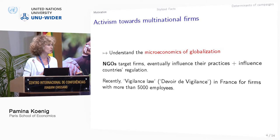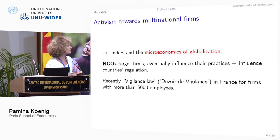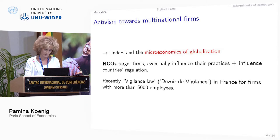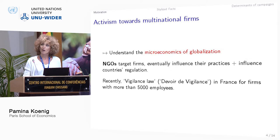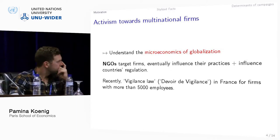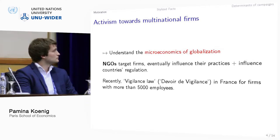They do this because NGOs are involved in protecting and preserving resources, mainly environmental resources or human resources that are used in producing these goods. An example of the potential importance of these agents in shaping trade and sales is the recent law in France, which is called the Vigilance Law — Devoir de Vigilance — which addresses firms with more than 5,000 employees.